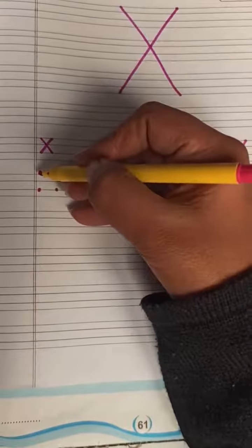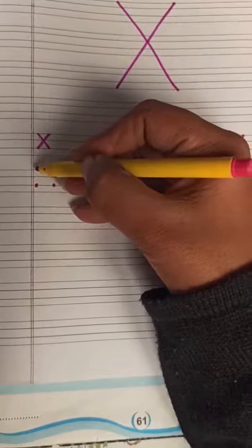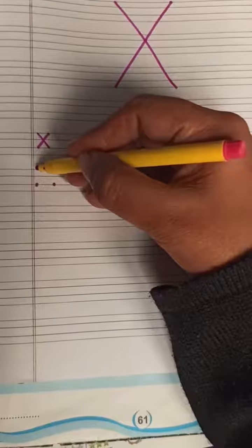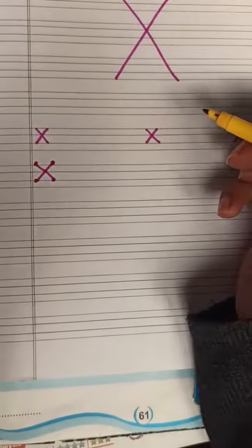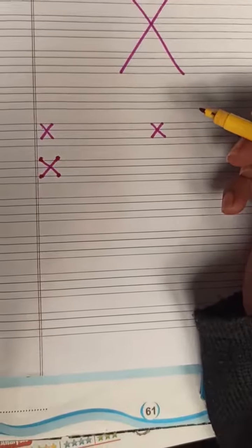And then, we will make... See now. Slanting line. Slanting line. Slanting line. So, this is your X for Christmas tree is ready.